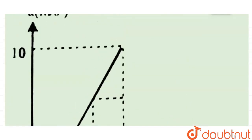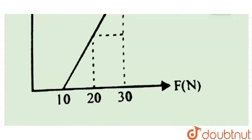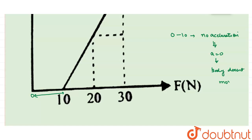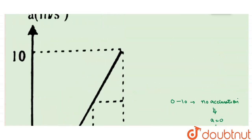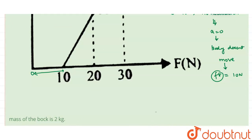Looking at the graph, from zero to ten there is no acceleration — acceleration is zero. This means the body doesn't move, which tells us that friction force is present. The maximum value of friction force is 10 newton, because after F equals 10N we start getting acceleration, meaning the force overcomes friction and the body starts moving.